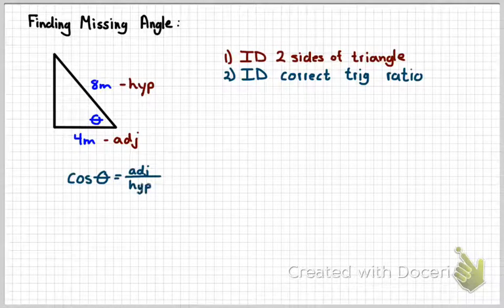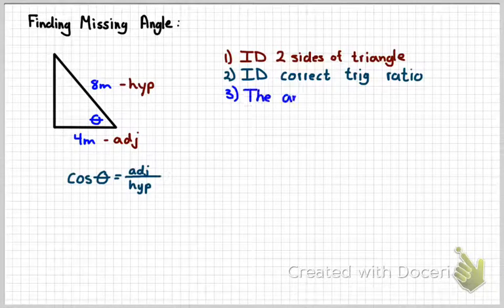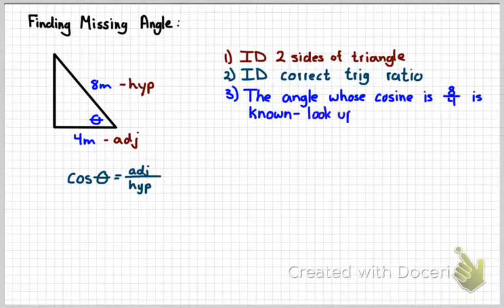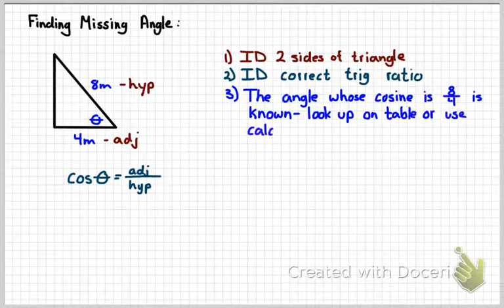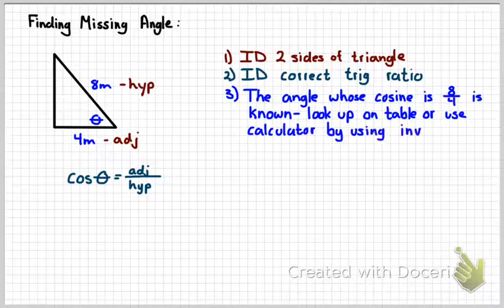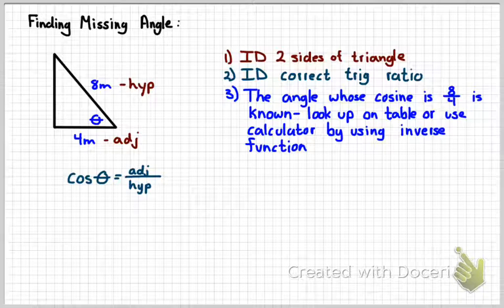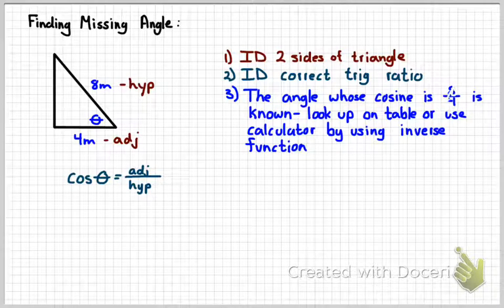So the cosine relates those together. The next thing that we're going to do is we're going to try to figure out which angle has a cosine of 8 over 4, or that should be 4 over 8.